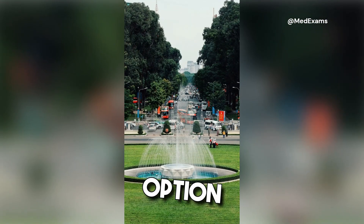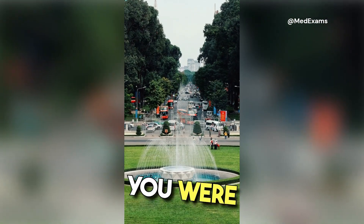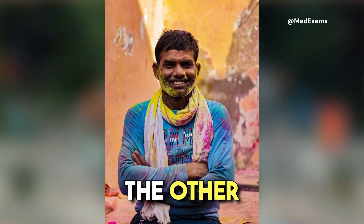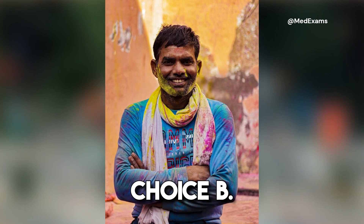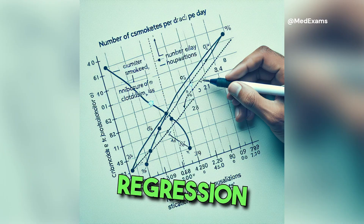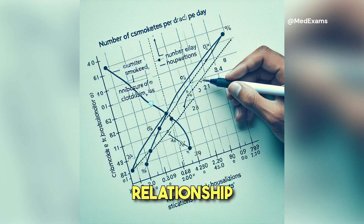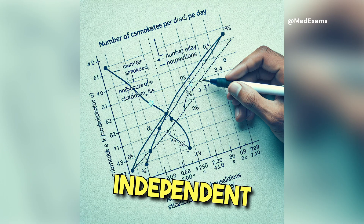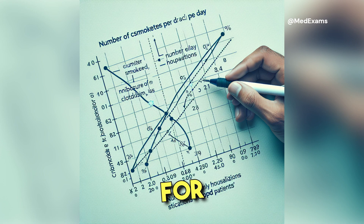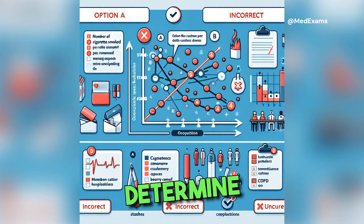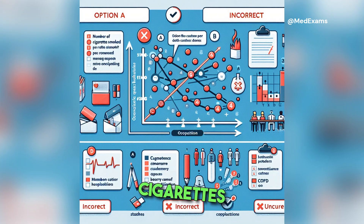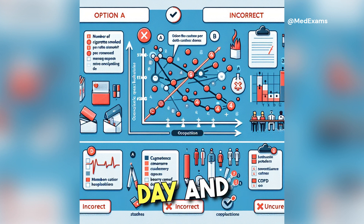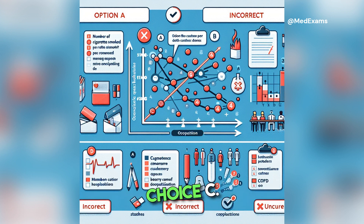If you chose any option other than a, you are incorrect. Choice b: linear regression is used to model the linear relationship between a dependent variable and an independent variable. For example, linear regression could be used to determine the relationship — described in terms of a trendline — between the number of cigarettes smoked per day and the number of yearly hospitalizations in COPD patients.